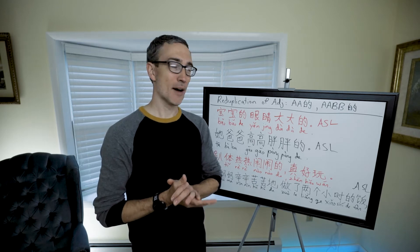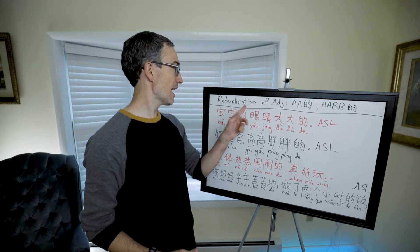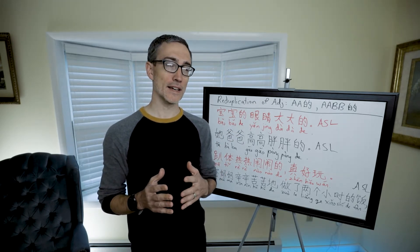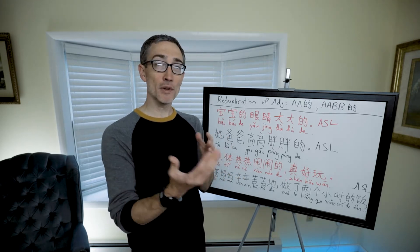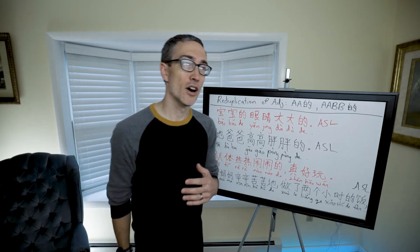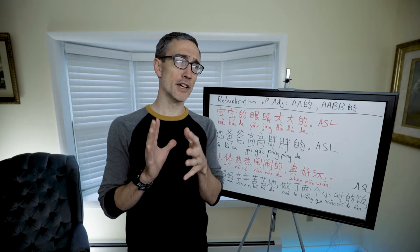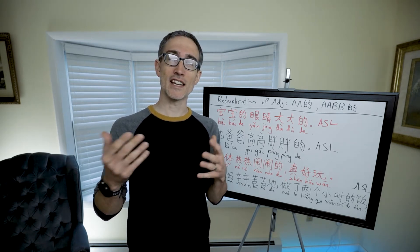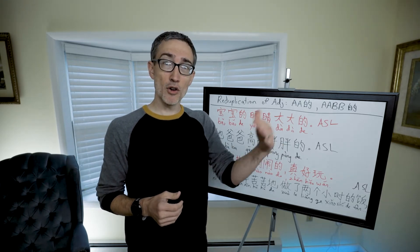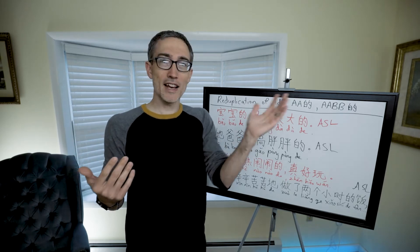Today we have a fun topic. In this first section we're going to talk about reduplication of adjectives. Reduplication is one of the fun, expressive parts of Chinese. Reduplicating different parts of speech actually has a different effect. For example, when you reduplicate verbs, it creates a casual tone or means 'just for a short time' — like 'come over and have a look.' It makes it casual.